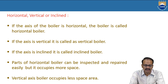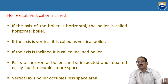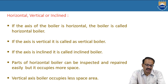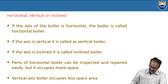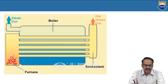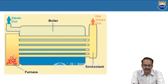The parts of a horizontal boiler can be easily inspected and repaired, but it occupies more space when compared to the vertical boiler. The vertical boiler occupies less space. Looking at a diagram of the horizontal boiler, you can observe hot gases passing and surrounding the water tubes, with steam coming out and hot gases going out from the furnace.